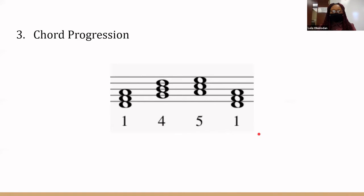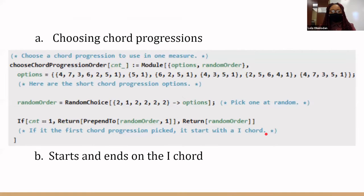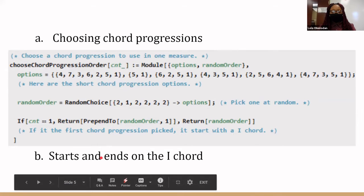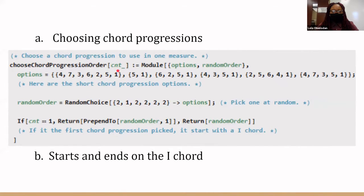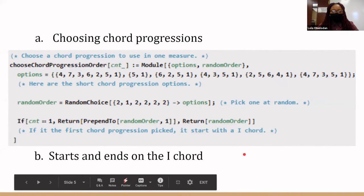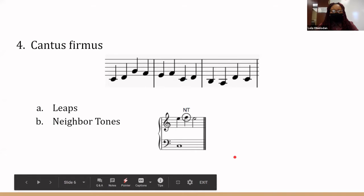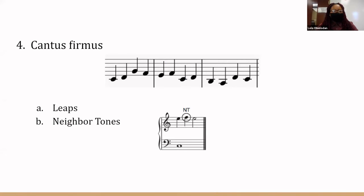We put these small chord progressions into lists and had our program randomly pick from them to create a larger one. We also made sure our larger chord progression started and ended on a one chord — we prepended a one to the beginning of the larger list, and each smaller progression ended with a one. With our final chord progression list, our program randomly picked one note from each chord to create a basic melody line.